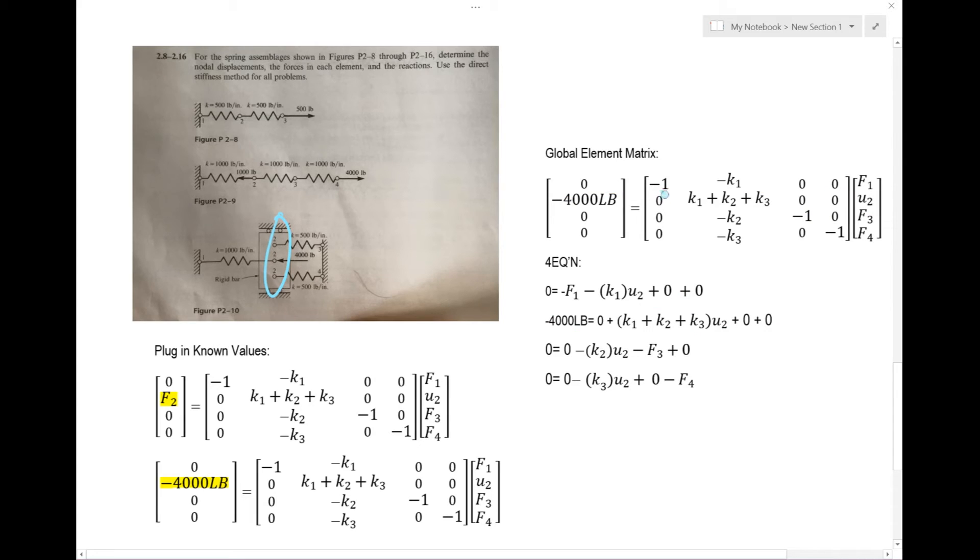Let's work this out. For F1, I go here and here — that gives me this value; here and here gives me this; here and here gives me zero; and zero here gives zero. For F2, that's represented by this row. I go here and here — that gives me zero; then this entry times this entry gives me this value; here and here gives me this; and the last two give me zero.